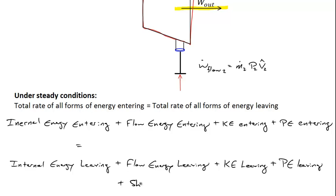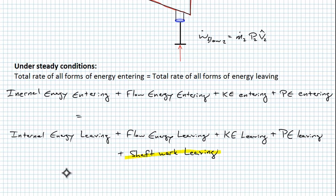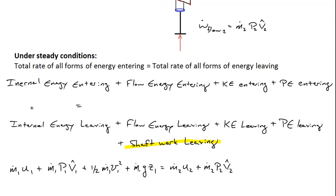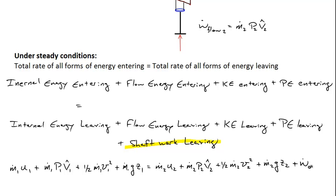Let me write this symbolically. The rate at which internal energy is entering is m1 u1. The rate at which flow work enters is m1 p1 times specific volume, plus kinetic energy, plus the rate at which any potential energy is entering. That has to equal the rate at which internal energy is leaving, m2 u2, plus the rate at which the system is doing flow work, m2 p2 v_hat_2, plus the kinetic energy leaving m2 v2^2, plus the potential energy m2 g z2, and then finally the shaft work that the turbine is producing.